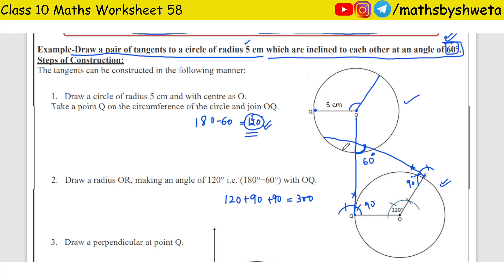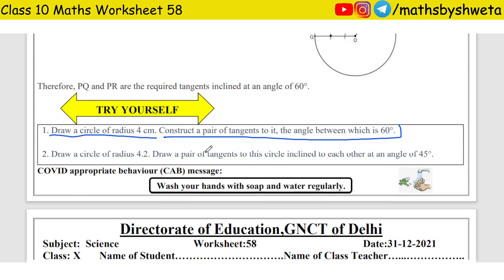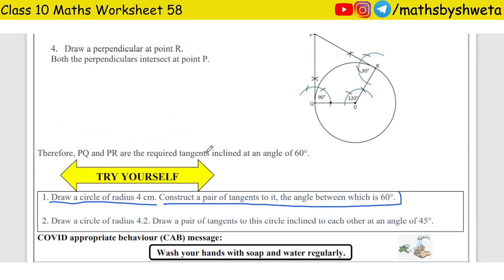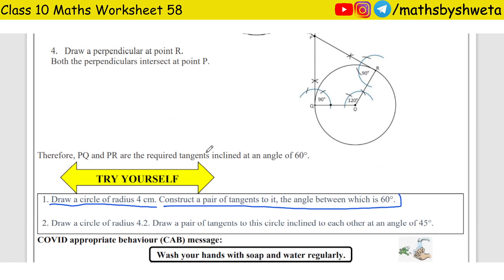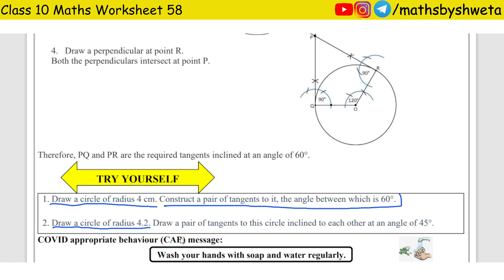In the third step, make the circle and mark R. You have made two points on the circle where the circle touches. Make a 90-degree perpendicular at each point and join the answer. Is it easy? Now the first question — you will do it yourself, just take a radius of 4 centimeters. The second question has a circle of radius 4.2 centimeters.